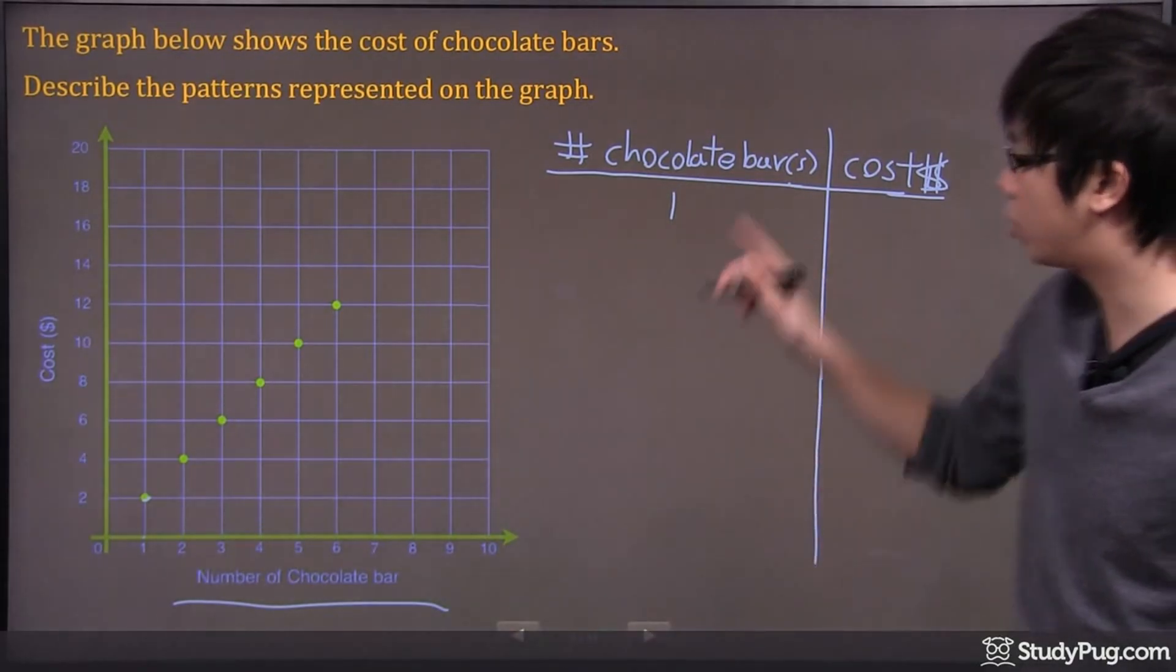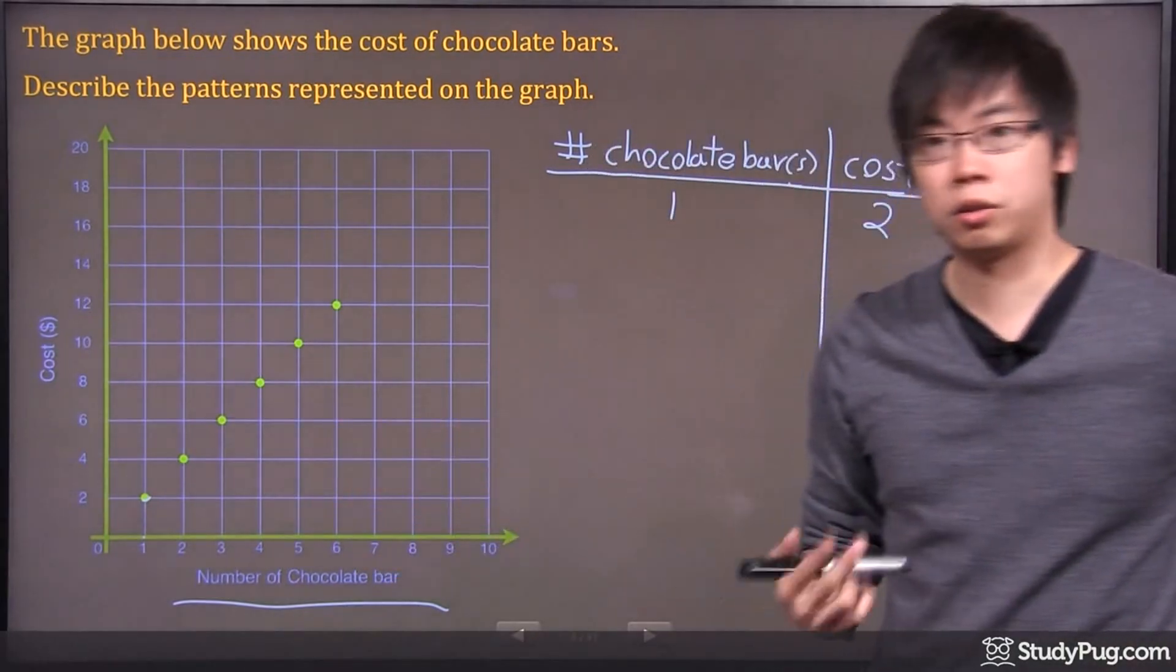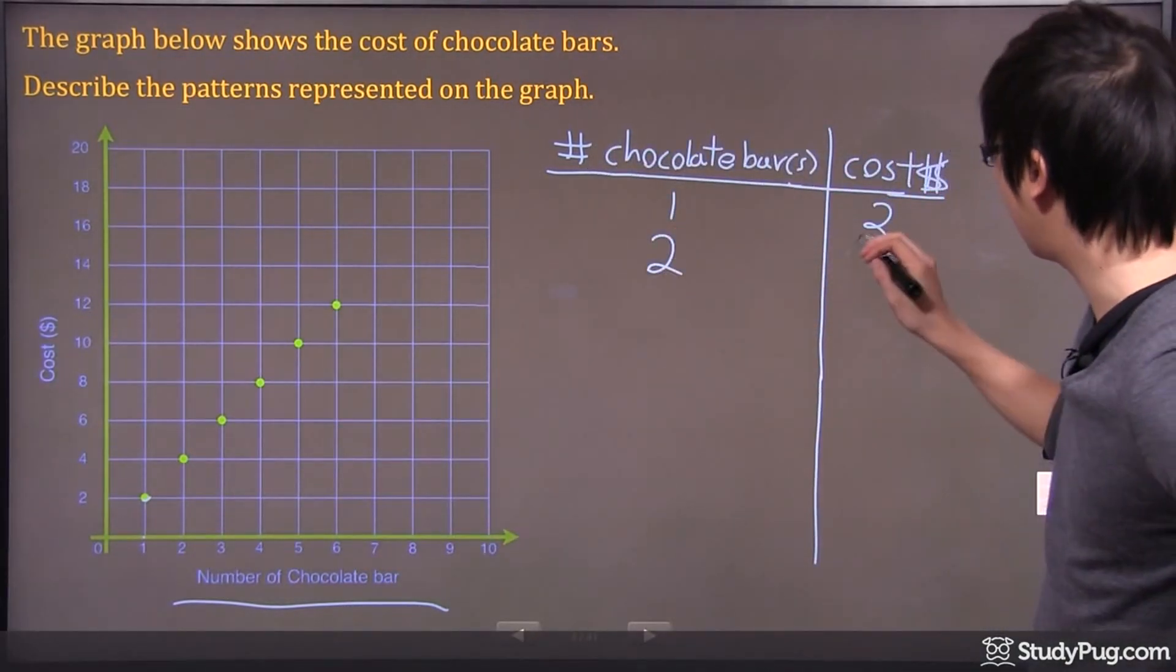If you have 1 chocolate bar, it's going to cost you $2. Now, if you buy 2, it's going to cost you $4.